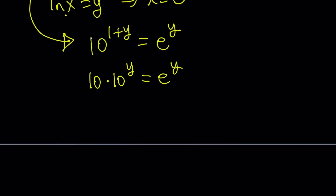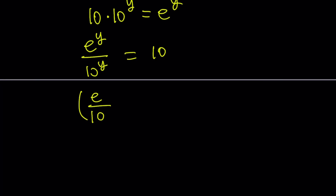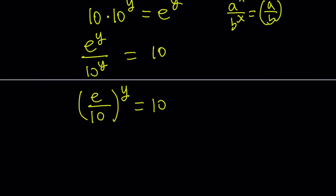Now we have the separation, so we can put the variables on the same side — divide both sides by 10 to the power y — giving us e to the y divided by 10 to the y equals 10. Since the numerator and denominator both have the same exponent, we can express them with a common exponent. This rule is: if you have a to the x divided by b to the x, that can be written as a over b to the power x.